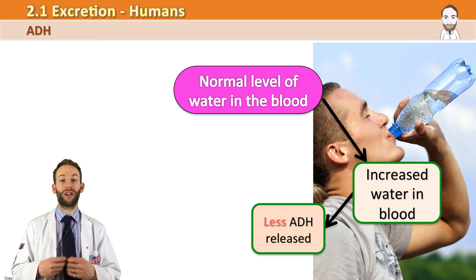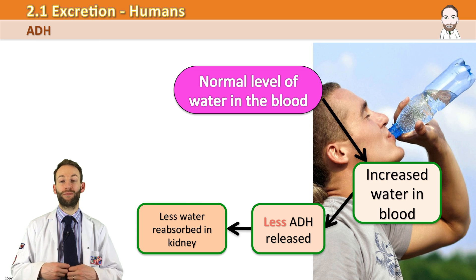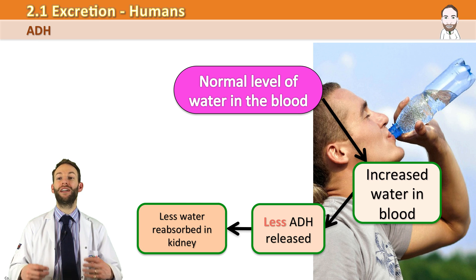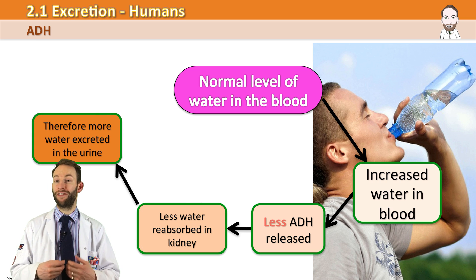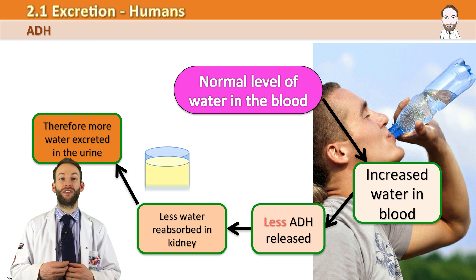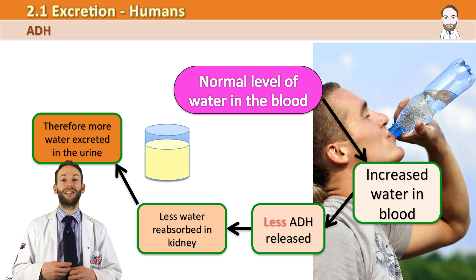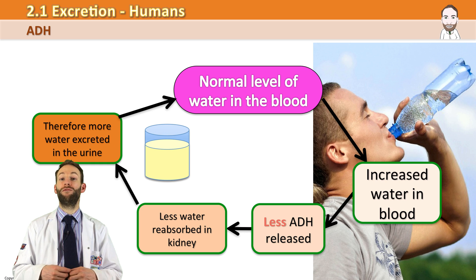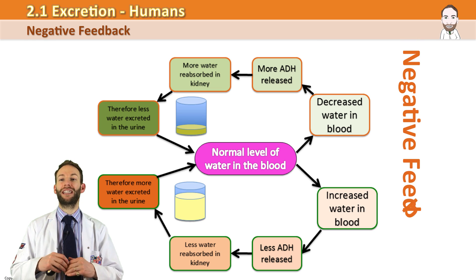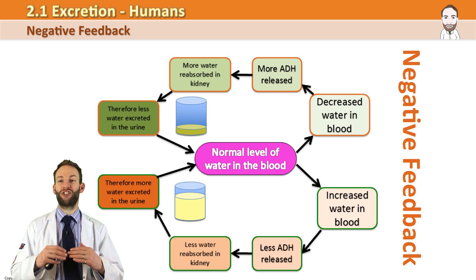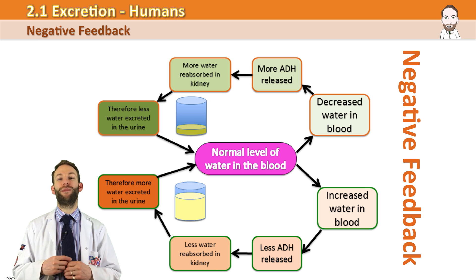The opposite is obviously the case if you are very hydrated — your brain secretes less ADH, therefore less water goes back into the blood and more stays in the urine, and you get very dilute urine. This is an example of what we call negative feedback, and it's how the body keeps everything in check and balanced in homeostasis.